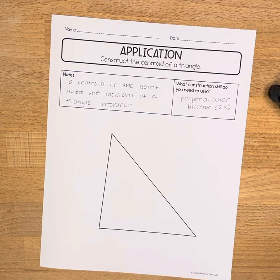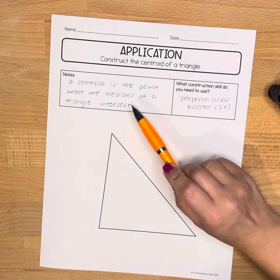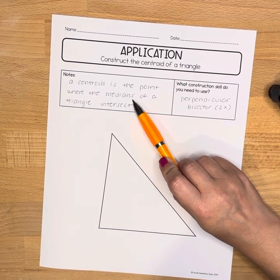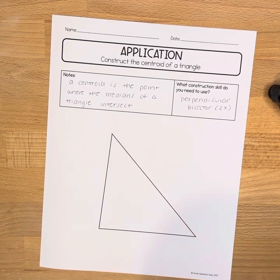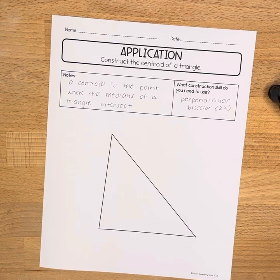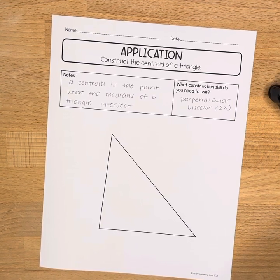For this, we'll be using the perpendicular bisector construction two times. We need to first construct a median and then a second median. You can also check out other videos on this playlist of how to construct a perpendicular bisector and how to construct a median if you need to.